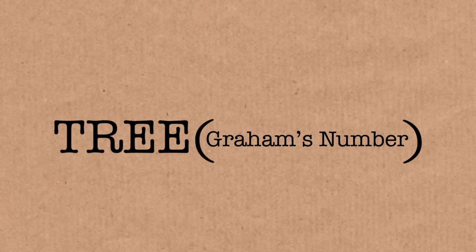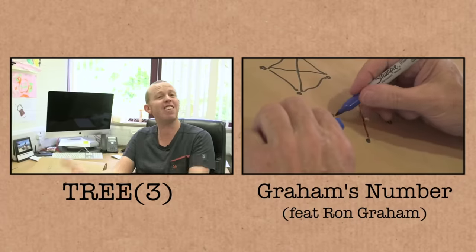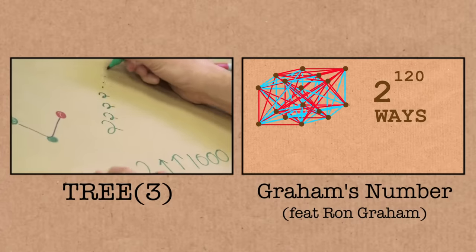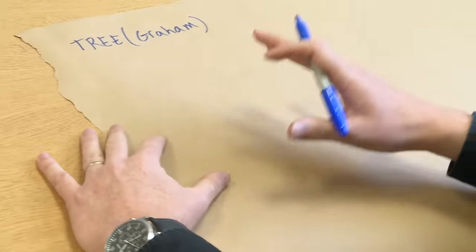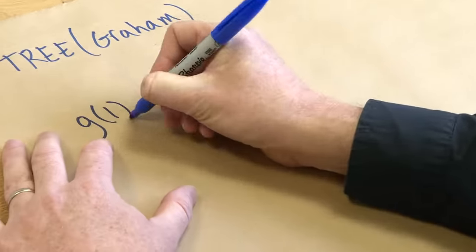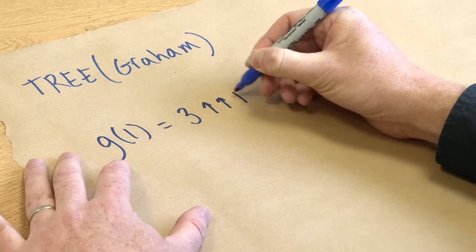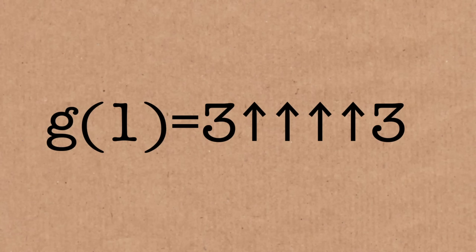I'm worried the universe is going to collapse on us! As you might remember from those original videos, both TREE(3) and Graham's number arise in a sequence. Let's remind ourselves where Graham's number came from. To get to Graham's number, we started out with something I'll call G1, which was 3 arrow arrow arrow arrow 3. This was a really big number.